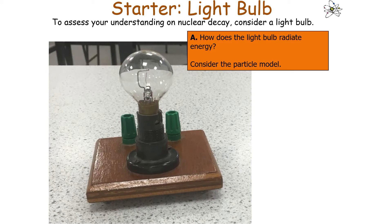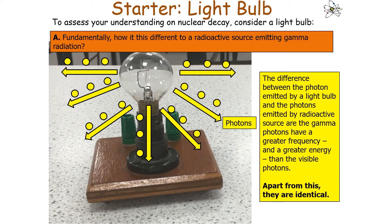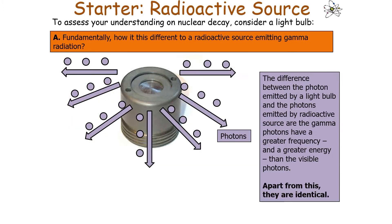If we've been successful in today's lesson, we should be able to understand the different properties of gamma ray emissions, describe and define the inverse square law, and calculate values of radioactive intensity. To understand about nuclear decay, we'll first consider a light bulb. The light bulb emits photons of visible light, and the energy of each photon is given by E = hf, Planck's constant times the frequency of the photon.